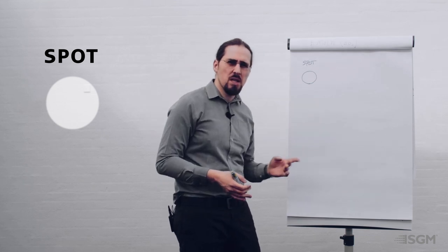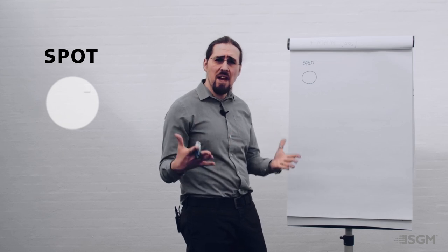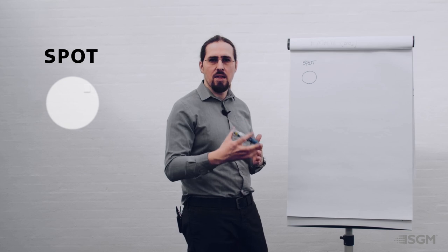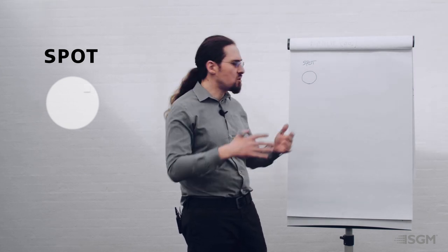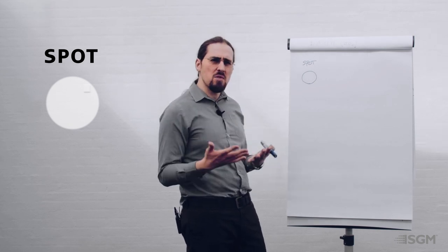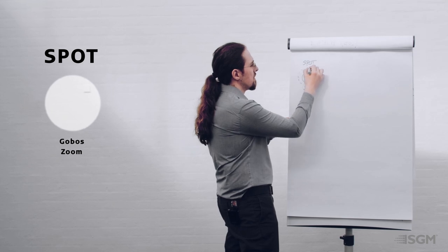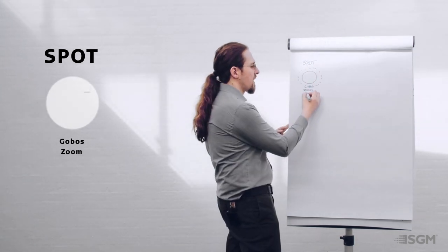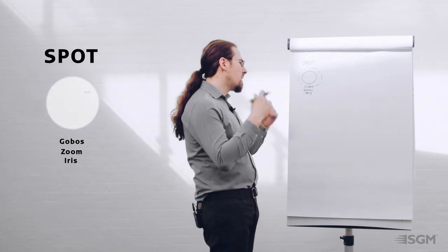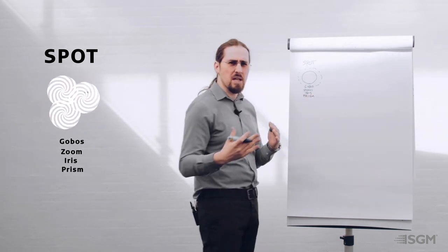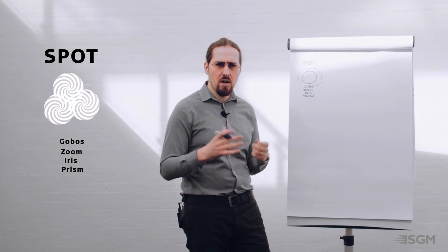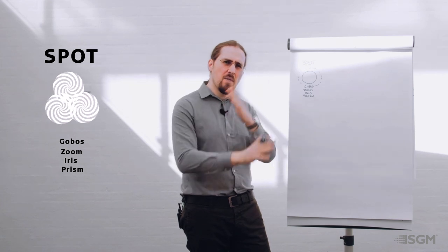With a spot you can focus and defocus the footprint, add gobos, add frost, add a prism, and apply different effects in front of the light to generate something very specific in a defined area. It's normally related to projection. A moving head spot will have gobos, a zoom to open or close the beam, an iris to reduce the beam, and a prism that can be combined with gobos to generate a three- or four-sided effect, spreading the projection in multiple directions.